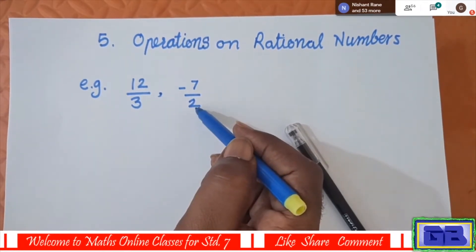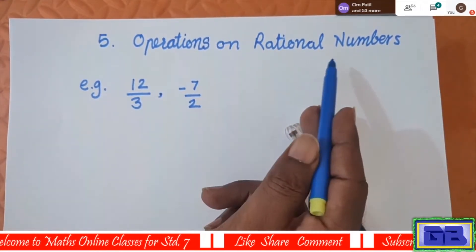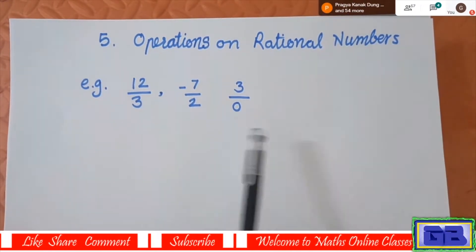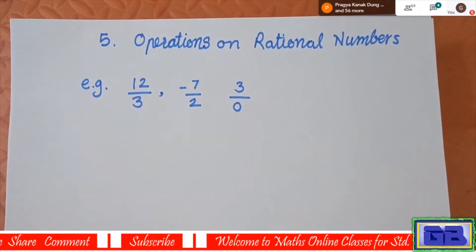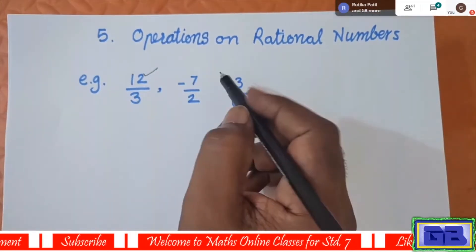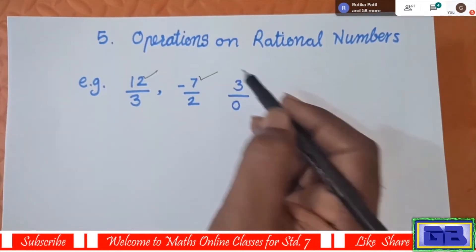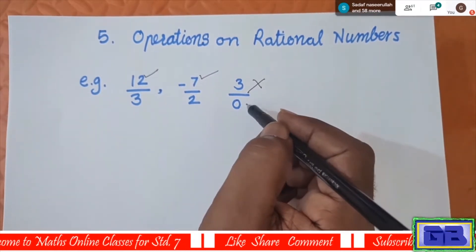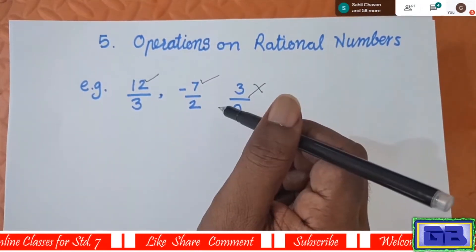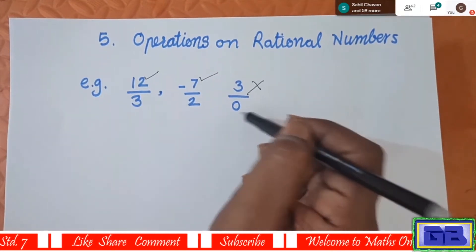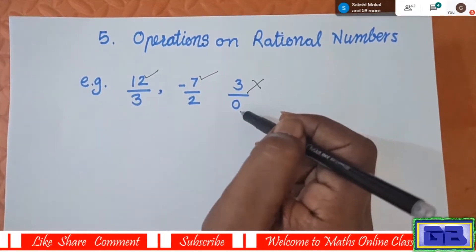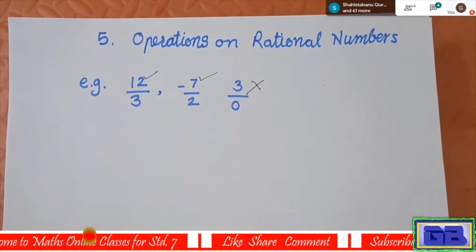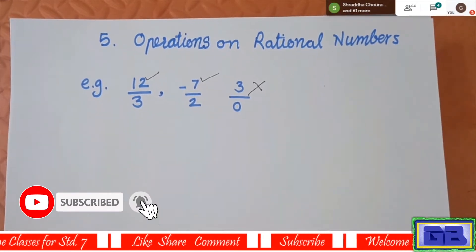If the denominator is not zero, then that fraction is a rational number. But if I take 3 upon 0, we cannot say this is a rational number — it is not. The denominator should be a non-zero digit. Zero should not appear at the place of the denominator. Now understand the meaning of rational numbers.